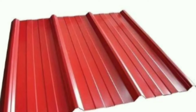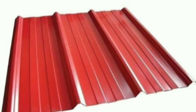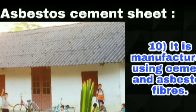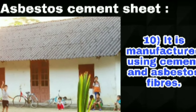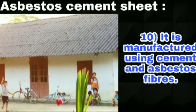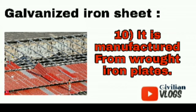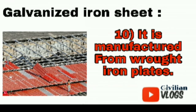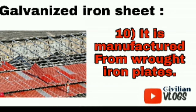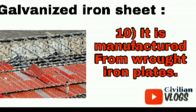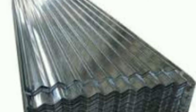The next difference is manufacturing. Asbestos cement sheet is manufactured using cement and asbestos fibers. The galvanized iron sheet is made from metal — it is made from soft iron plates that are galvanized, not rough iron plates.